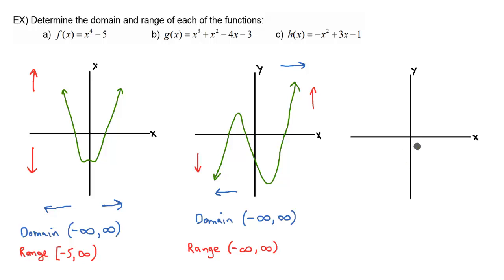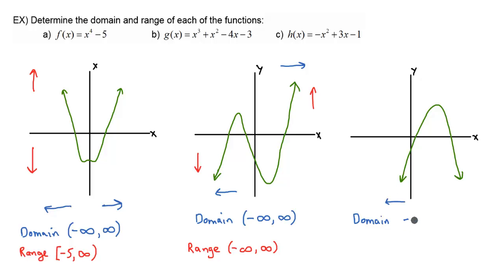On to part C. This graph I went ahead and did in Desmos as well, and here's the rough sketch. Just by looking at this graph, we could figure out what the domain is. As we follow the graph to the left, our x values keep going towards negative infinity, and as we move to the right, our x values keep going forever as well. So the domain is going to be all real numbers for this function, h of x.